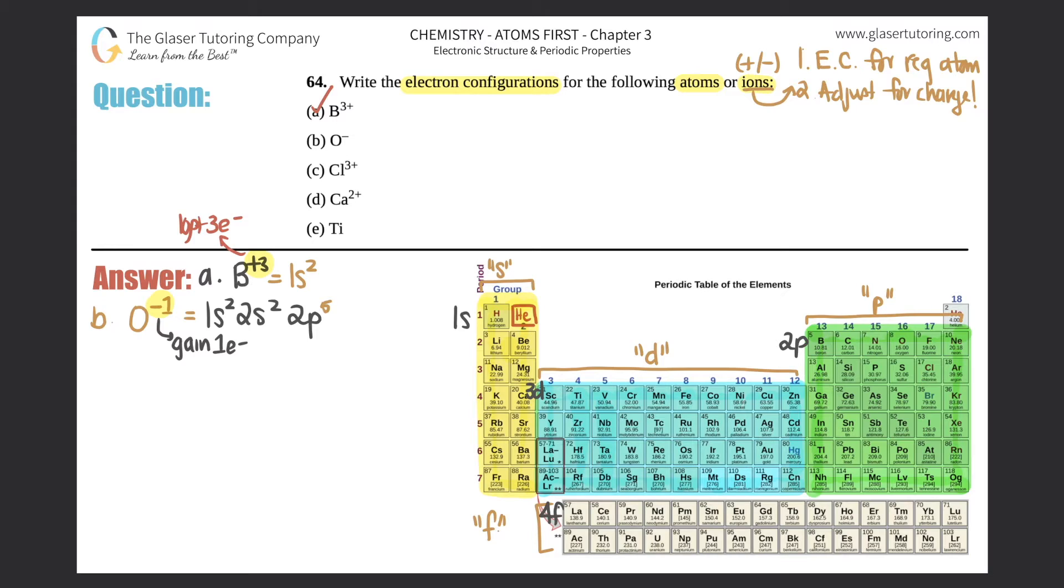Part c: Cl³⁺. Chlorine is all the way over here. Let's first write it for chlorine and then we will take away the three electrons. You always start with number one, hydrogen, so that's 1s², 2s². Now we're in the p's: 2p⁶ because I have to get all the way to number 17. Now I'm over here, that's the 3s, and I gotta pass all of them, so 3s². Now I'm over here, 3p, and now I have to go one, two, three, four, five to reach chlorine.